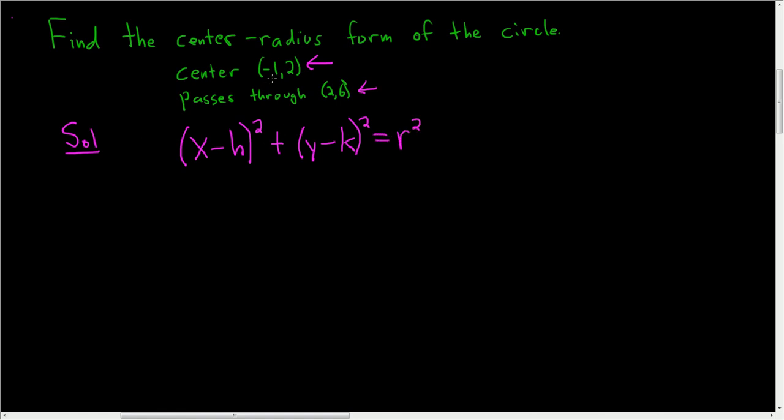So in this problem, h is negative 1 and k is 2, so we end up with x minus negative 1, so it's really a plus 1, plus y minus 2 and that's being squared, and this is equal to r squared.